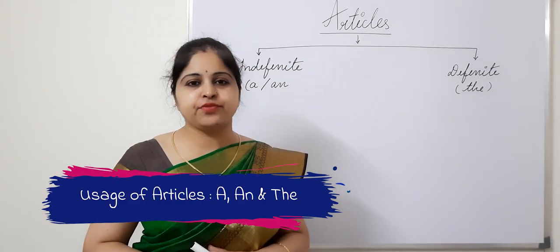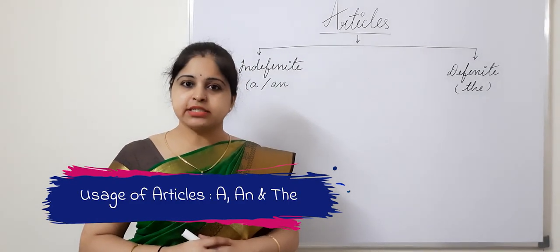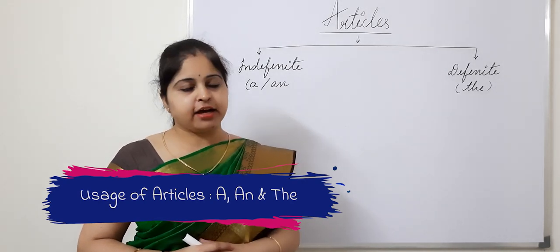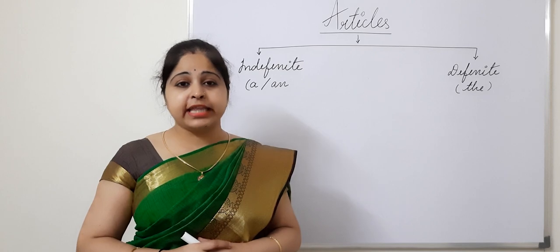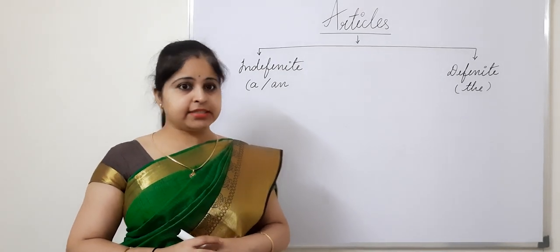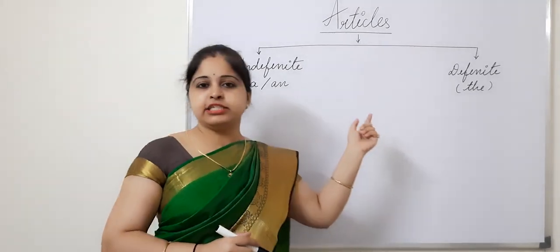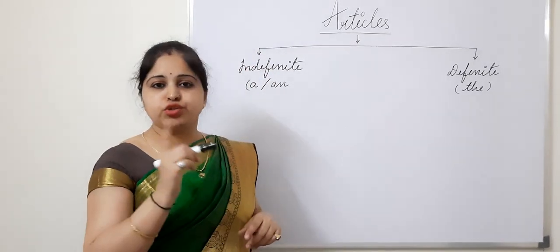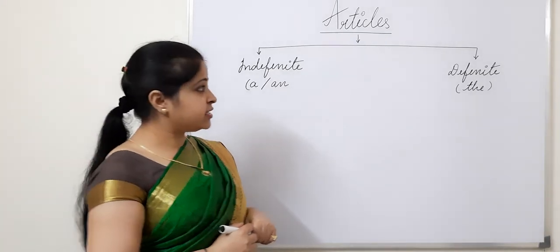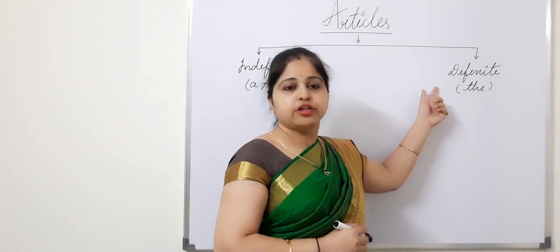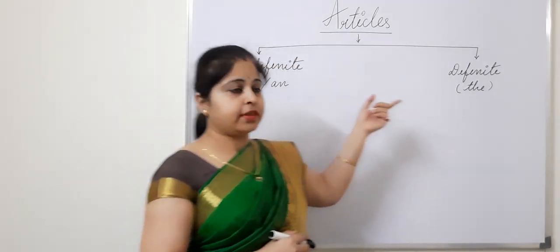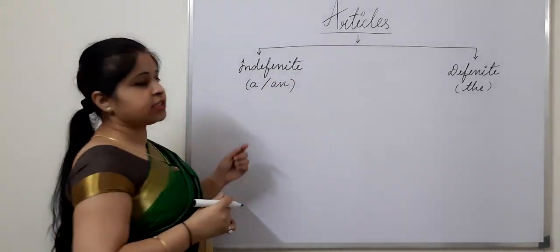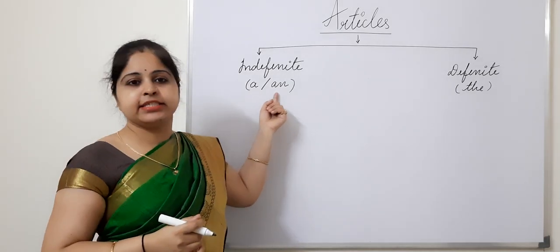Hello children! In this video, we are going to practice a very important topic of English grammar, that is, Articles. There are three articles: a, an, and the. They are divided into two types. First is the definite article, which is 'the', and the other is indefinite articles, which are 'a' and 'an'.